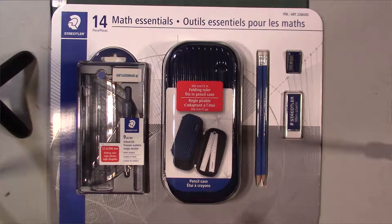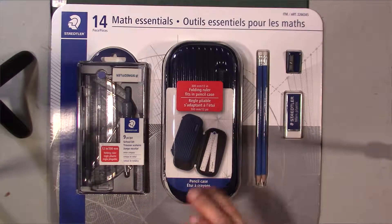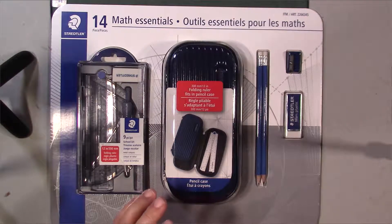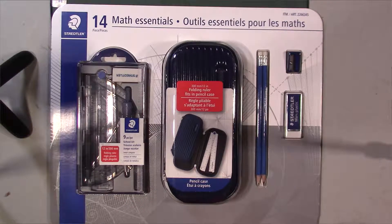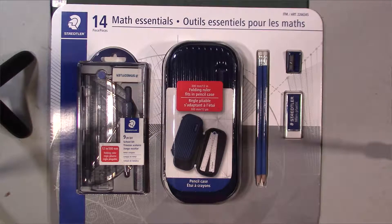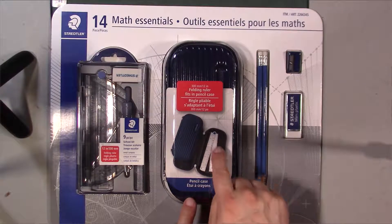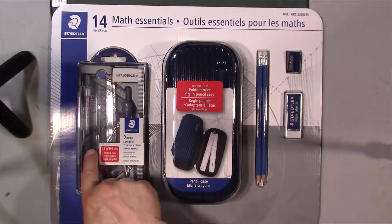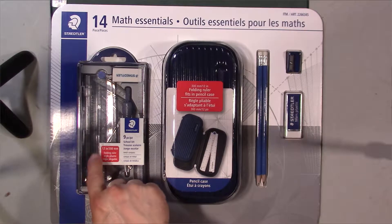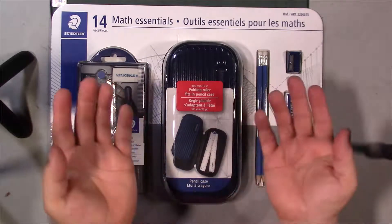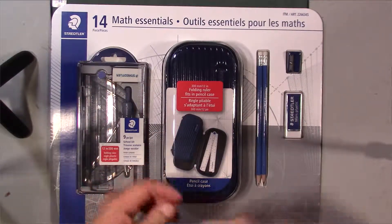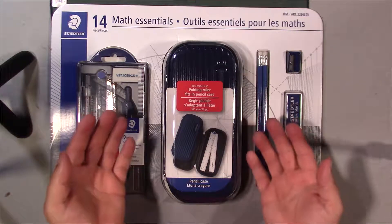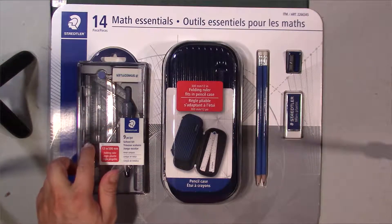What really caught my eye with this particular set was one, it was inexpensive, was ten dollars Canadian. Two, this foldable ruler. And three, there's actually a mechanical pencil inside the kit here.